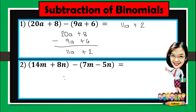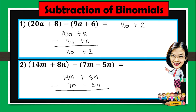Number 2: 14m plus 8n minus 7m minus 5n. Change the sign of the subtrahend, or find its opposite — the opposite of negative 7m will be positive, and the opposite of negative 5n will be positive. Proceed to addition: 14 plus negative 7 gives positive 7m, and 8 plus 5 is 13. The answer is 7m plus 13n.